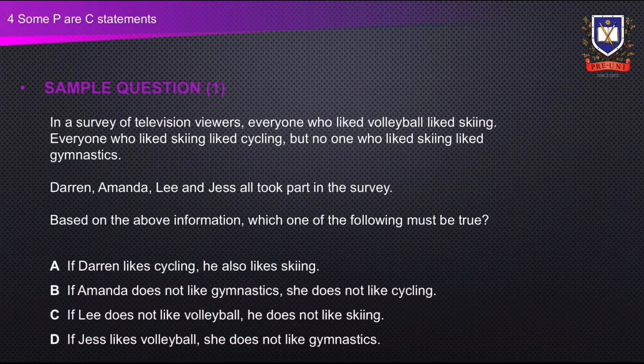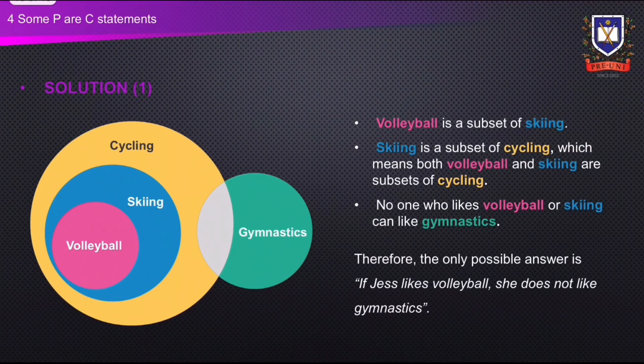What do you think the answer is? Using the information in the question, we can draw the following Venn diagram. Volleyball is a subset of skiing. Skiing is a subset of cycling, which means that both volleyball and skiing are subsets of cycling. No one who likes skiing likes gymnastics, which means no one who likes volleyball or skiing can like gymnastics either. Therefore, the only possible answer is D: if Jess likes volleyball, she does not like gymnastics.